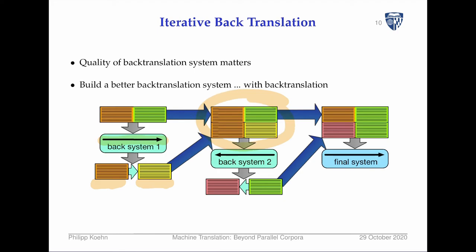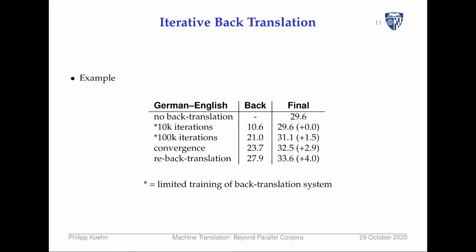The target side when building any system is always correct data — always observed text in the output side of the translation system. We then build the system in the reverse direction, take target language text to synthesize source language text, and put it all together for the final system. Experiments show substantial gains from this method, which has become a very standard technique used in both low-resource and high-resource scenarios.